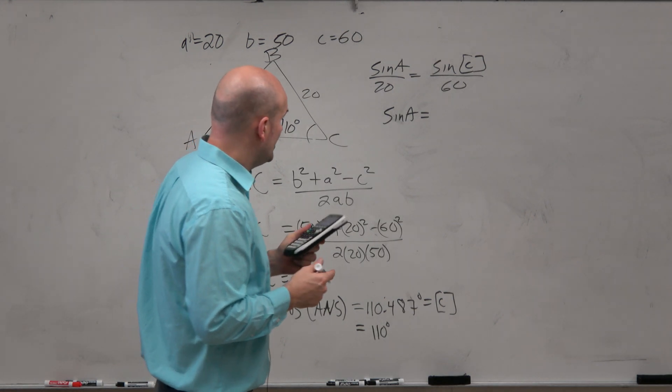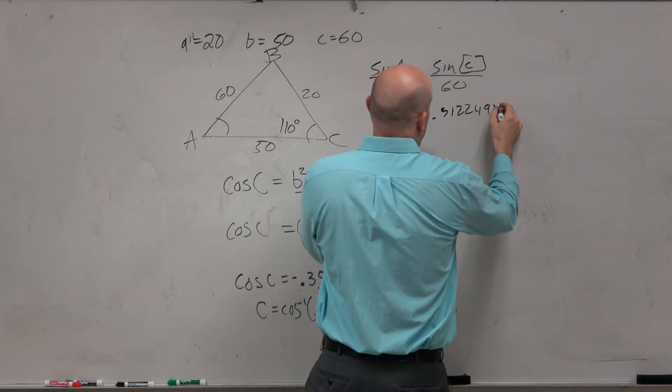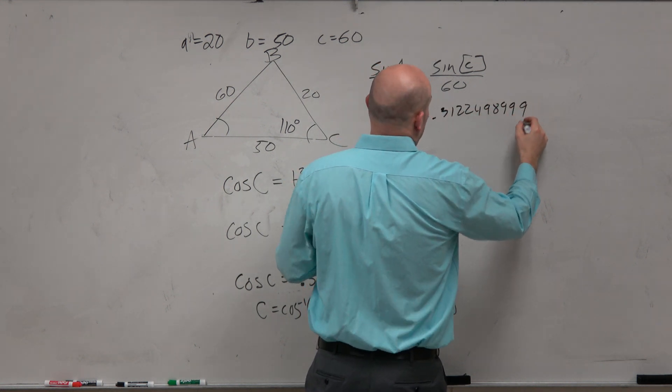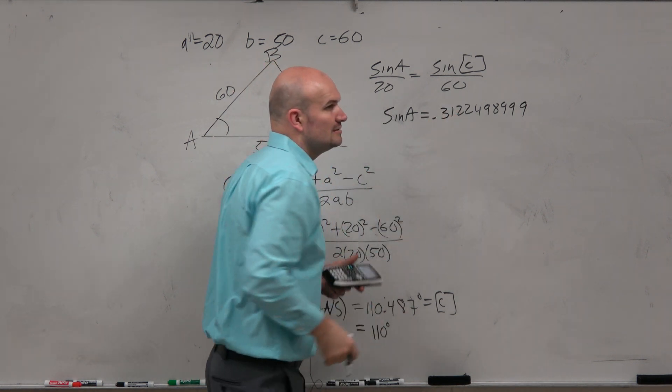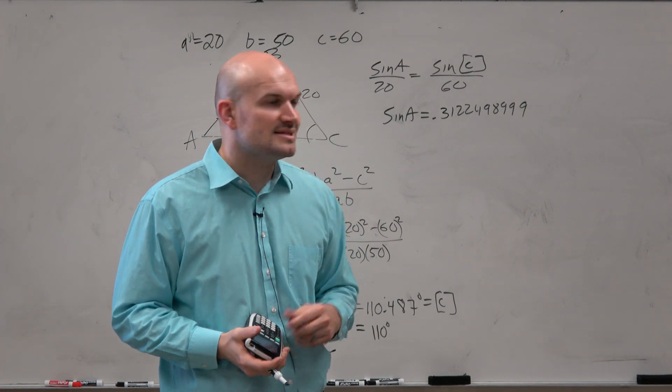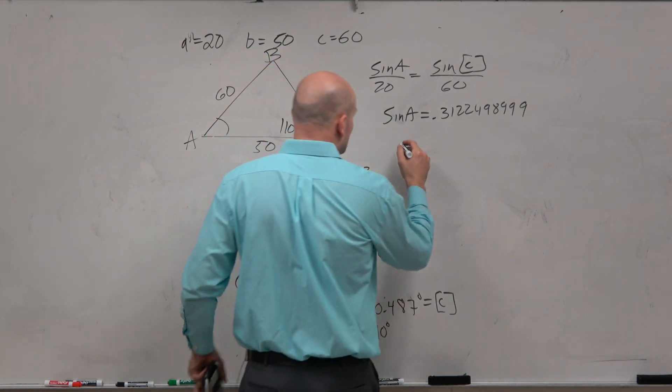Make sure you're closing your parentheses. And I get 0.31224989. Is that my answer? Is that my angle? No. Don't stop writing this down. That's the sine of your angle. So how do you find your angle? You take the inverse.